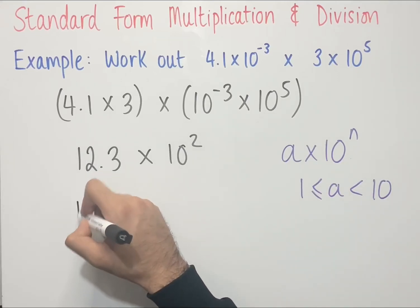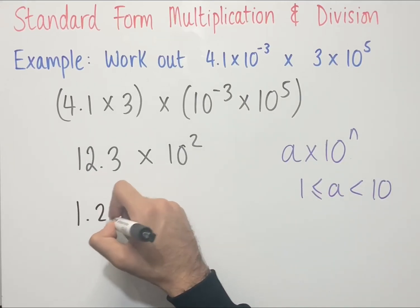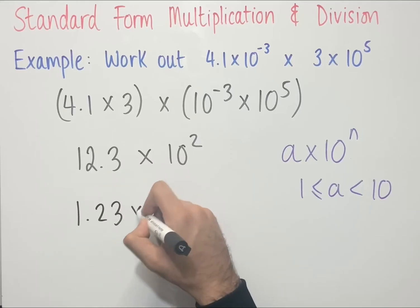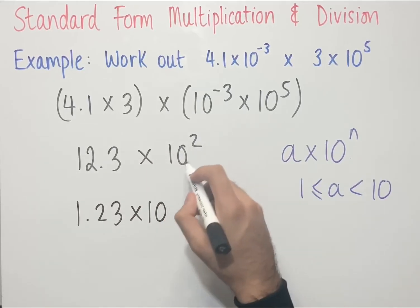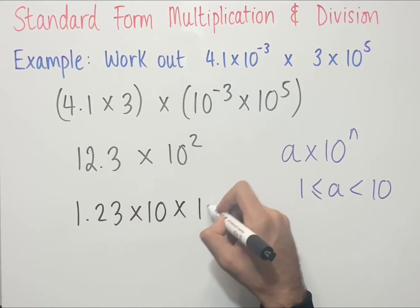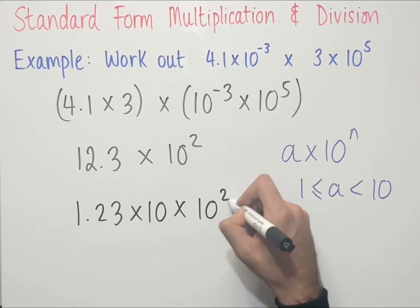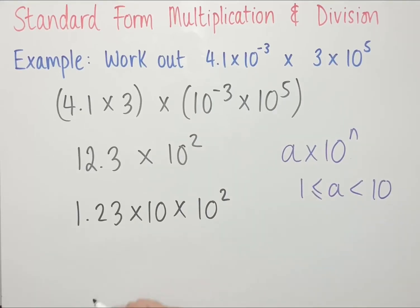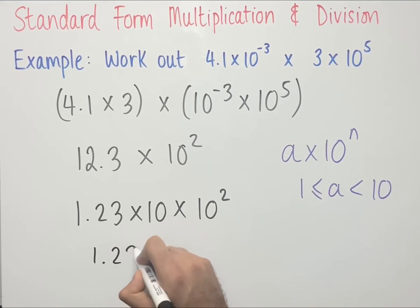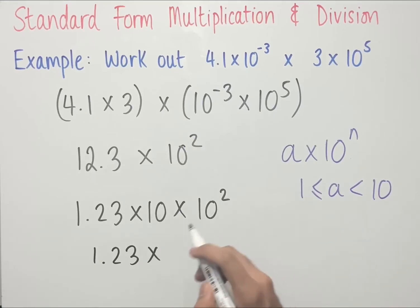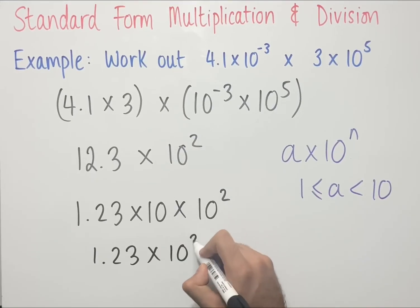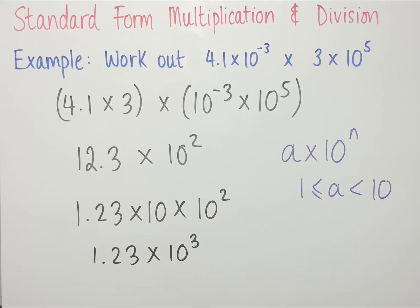12.3 can be written as 1.23 times 10, multiplied by 10 squared on the end. We can simplify this as 1.23 times 10 to the power of 3, since 10 times 10 squared gives us 10 to the power of 3. And this is now in standard form.